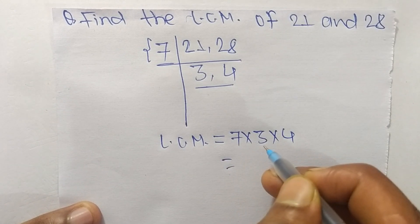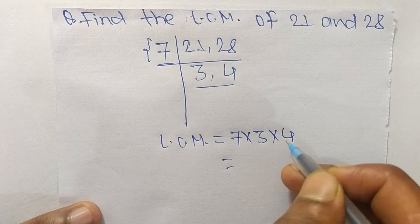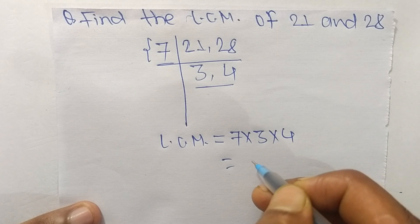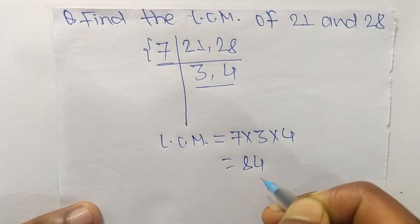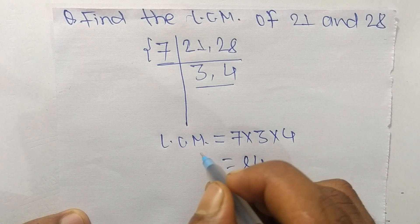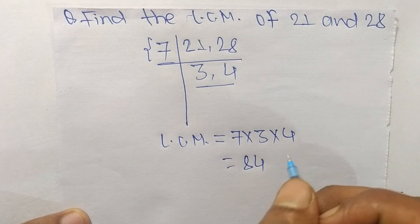So it is 7 times 3, which is 21. 21 times 4 is 84. So 84 is the LCM of 21 and 28.